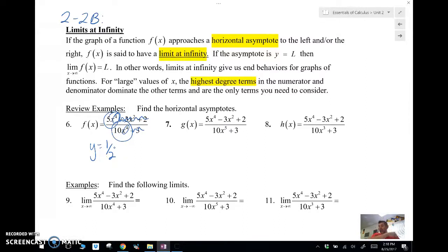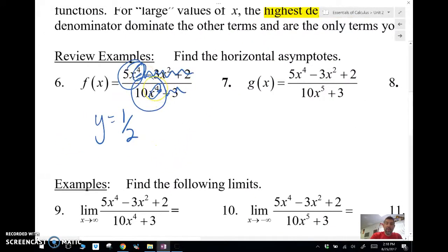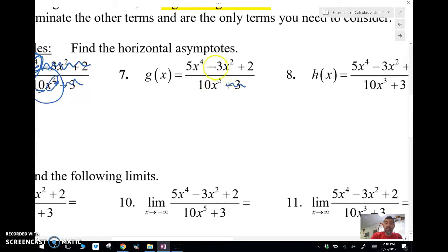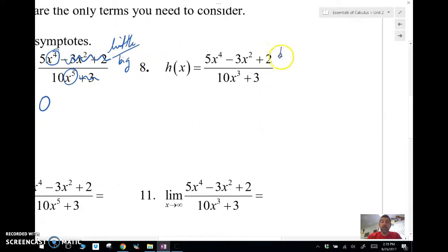So that's the rule that if the powers are the same, the degrees are the same highest degree, then we're just going to take the coefficients. So here on number 7, if the degree on the bottom is bigger than the one on the top, then this is going to get larger and larger faster than this one does. And so this is going to go to 0. And my horizontal asymptote is y equals 0. So this is the little over big rule. And then this one here is the big over little rule. And the big over little rule means that if the degree is bigger on top than it is on bottom, then there is no horizontal asymptote.